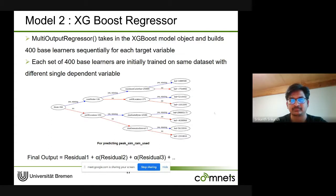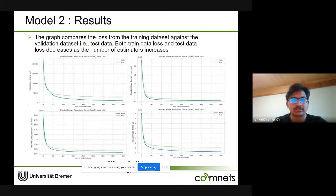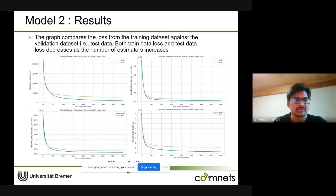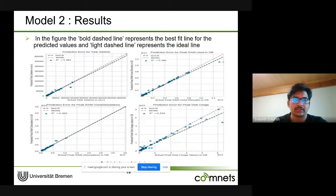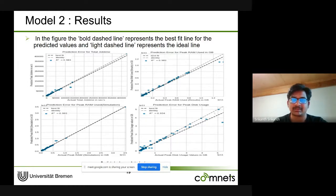The XGBoost results include a plot of loss versus number of estimators — as expected, as the number of estimators increases, the loss decreases gradually. Loss is in gigabytes for resource targets and in seconds for time. The actual-versus-predicted values plot shows a bold dashed line representing the best fit for predicted values, and a light dashed line showing the identity line where error would be zero. For all four target variables, the lines are close to each other, indicating predicted values are close to actual values.